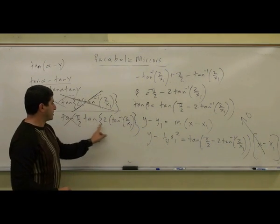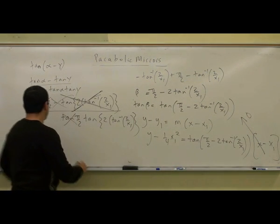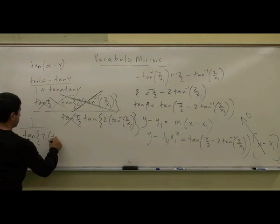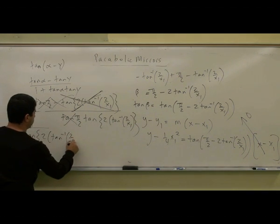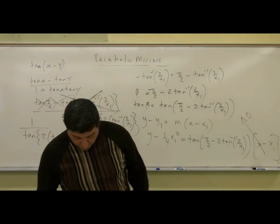Well you have tangent of π over 2 and tangent of π over 2, it cancels itself out. So I'm left with what? This thing disappeared, this thing cancelled out with this. So I'm left with 1 over tangent of this. So basically this whole thing reduced to 1 divided by tangent of twice the tan inverse of 2 over x1. Now I have to use the double angle formula.